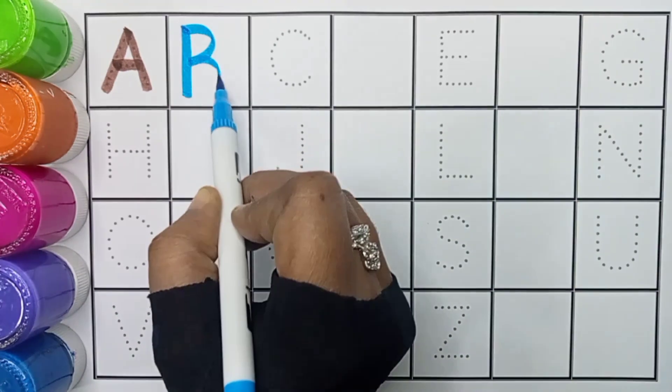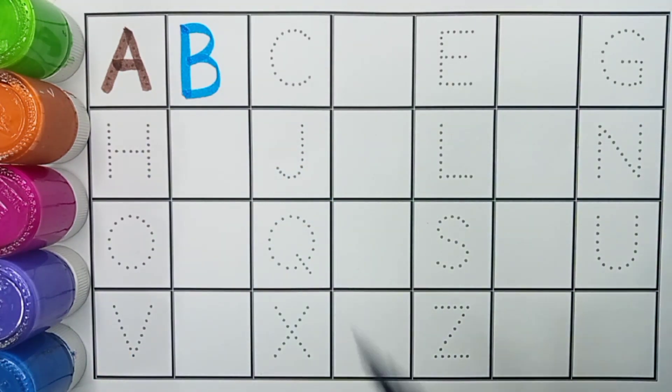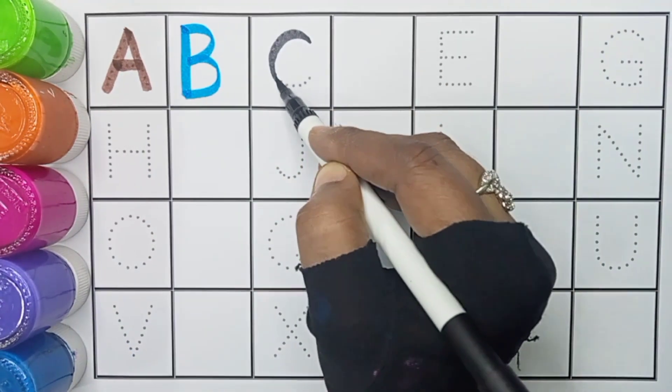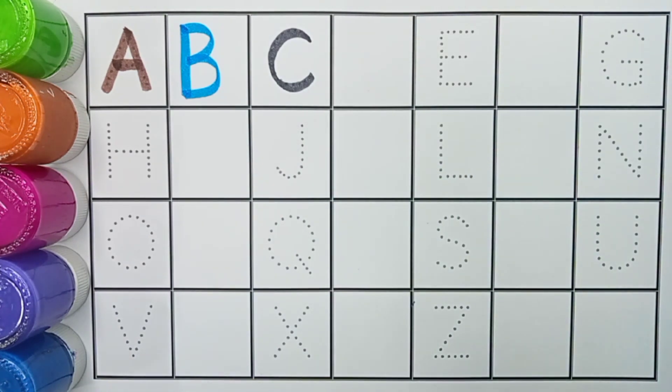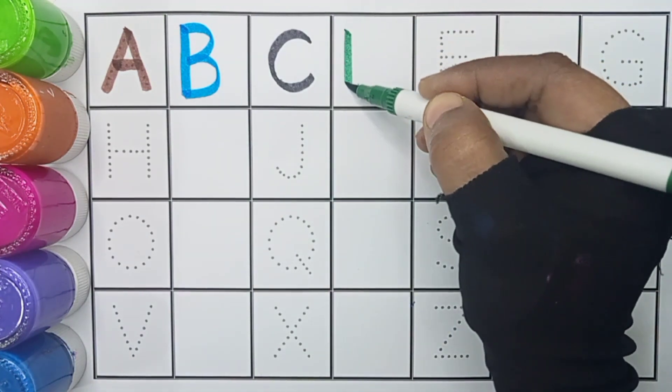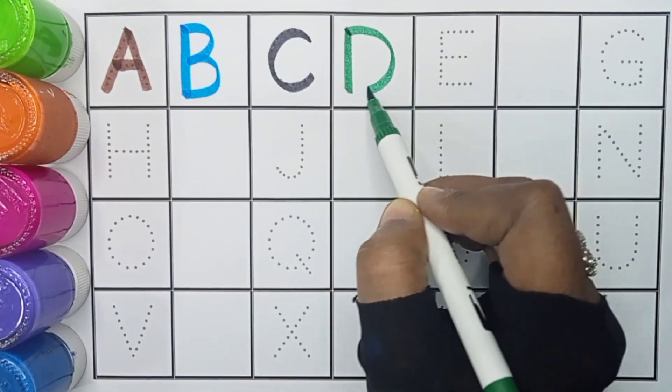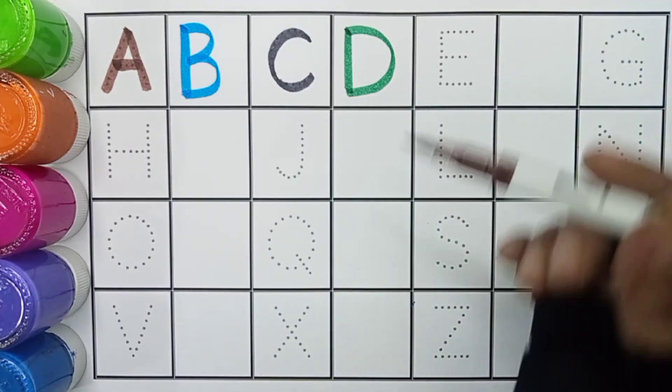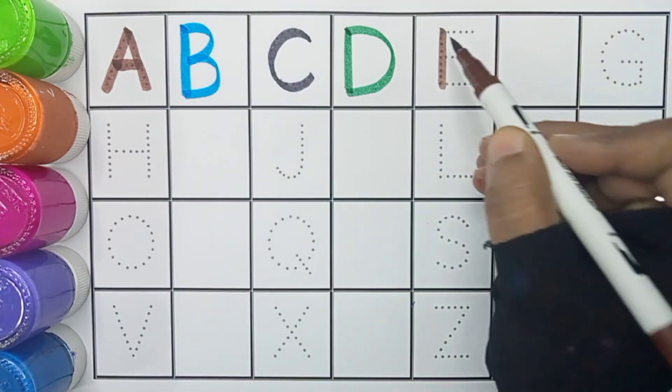Black color. C, C for cat. Green color. D, D for dog. Brown color. E, E for elephant.